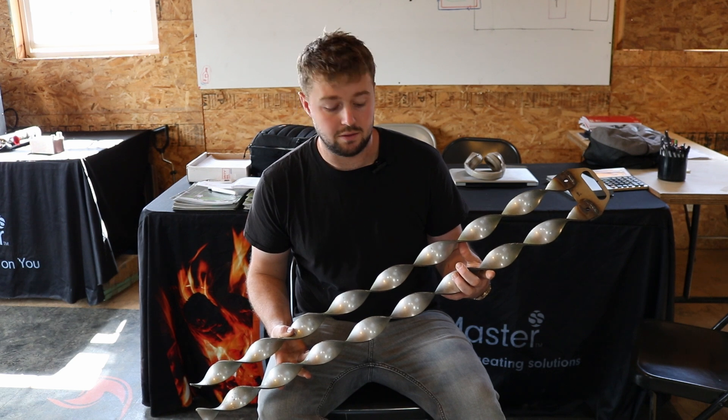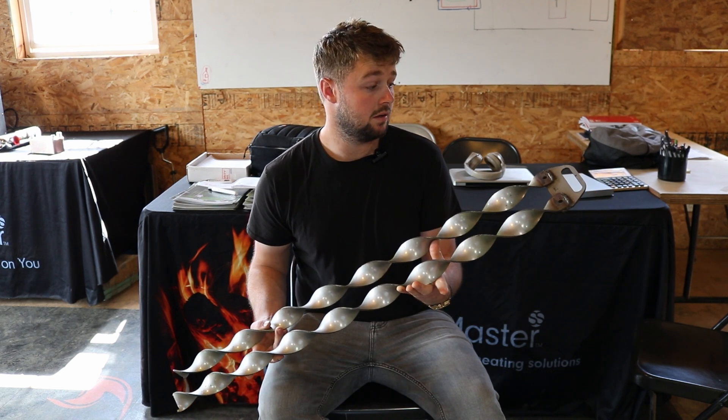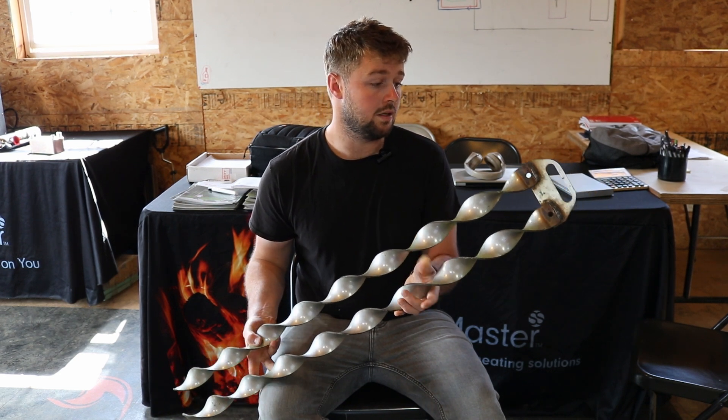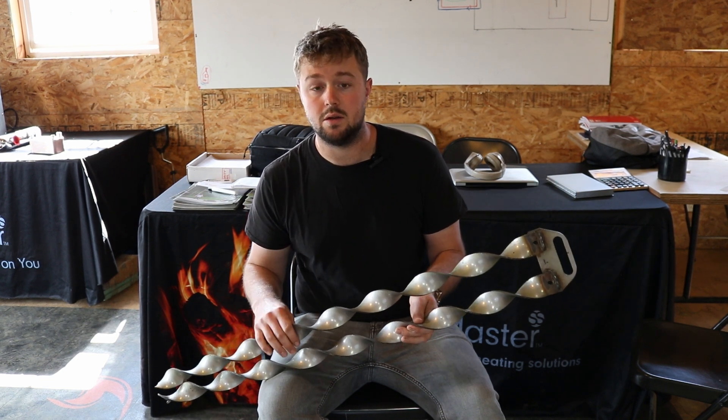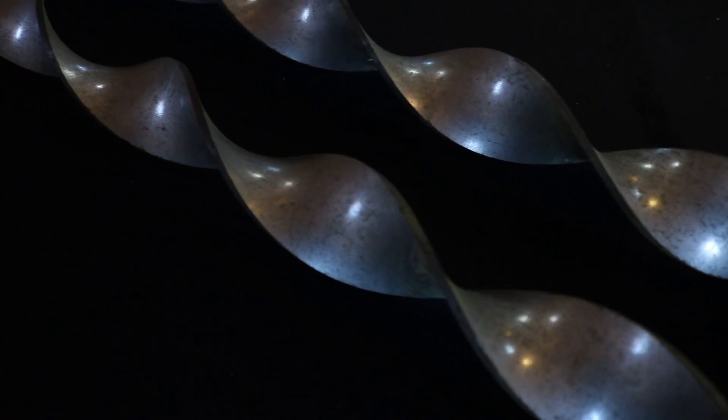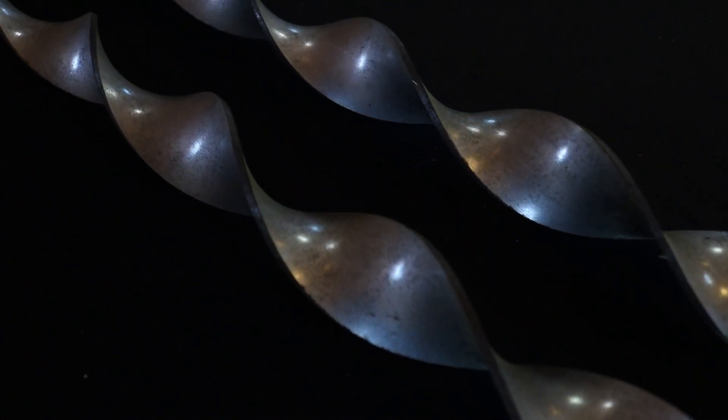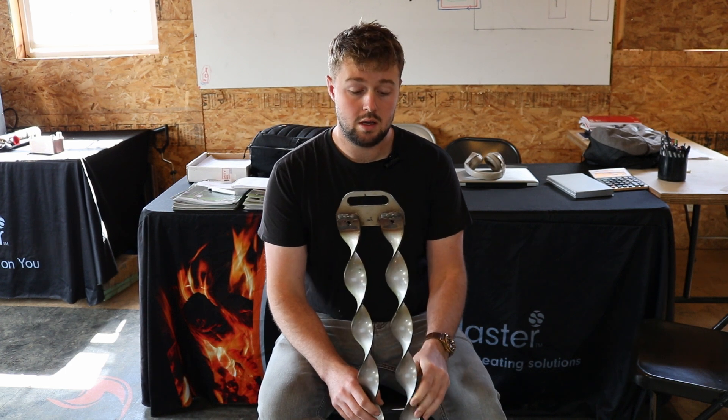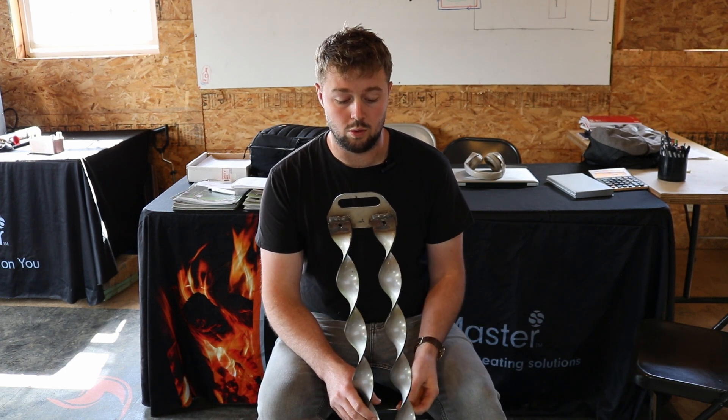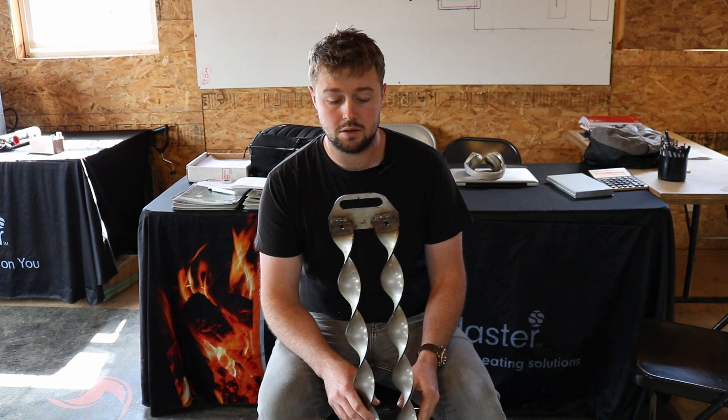So Heatmaster has an advantage over the competition in several different ways with this turbulator. First off, the material they use is 409 stainless. It's an eighth of an inch thick. It holds up quite a bit better to heat and abuse, so it won't deform or bend under stress as easily.